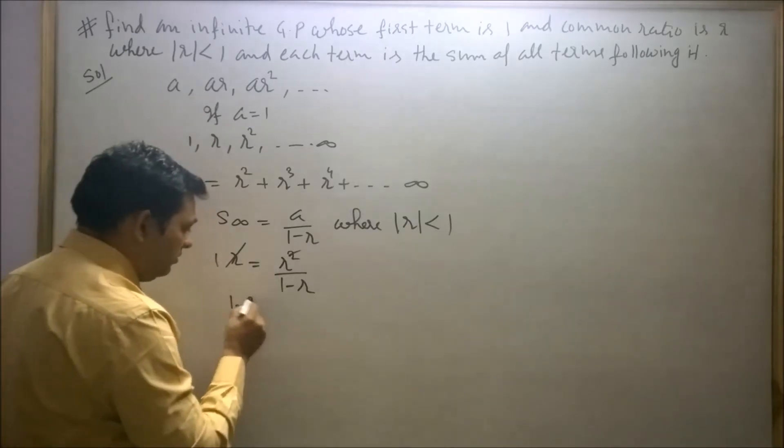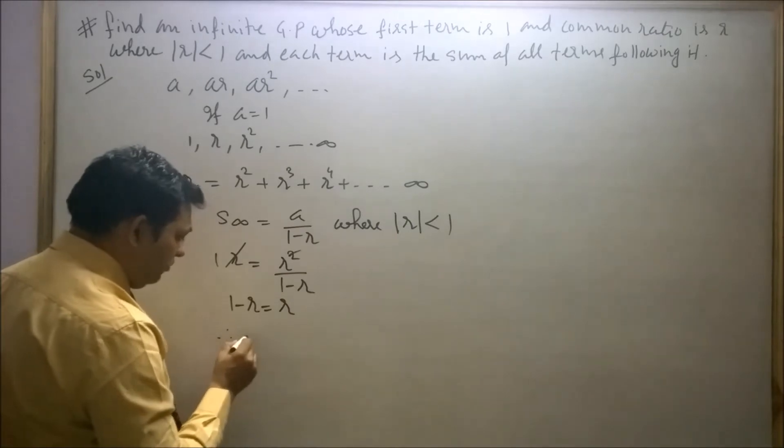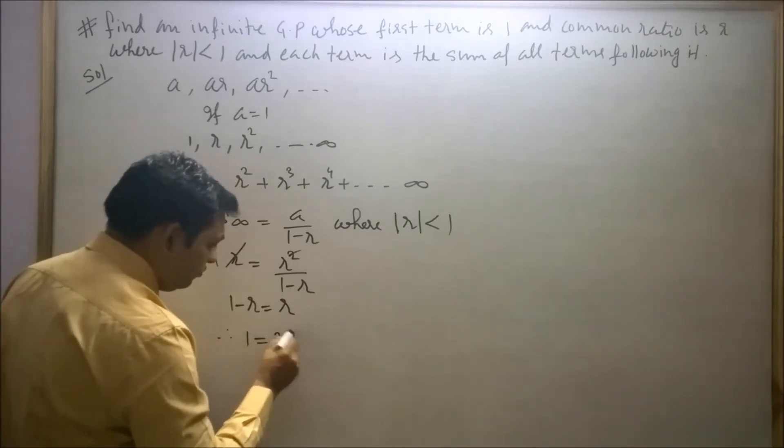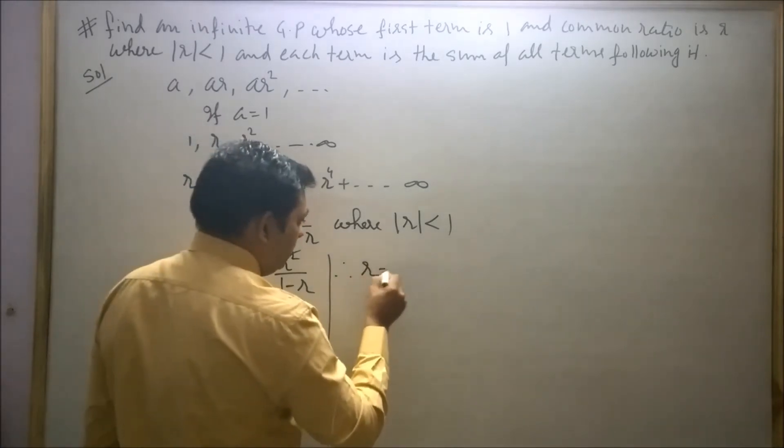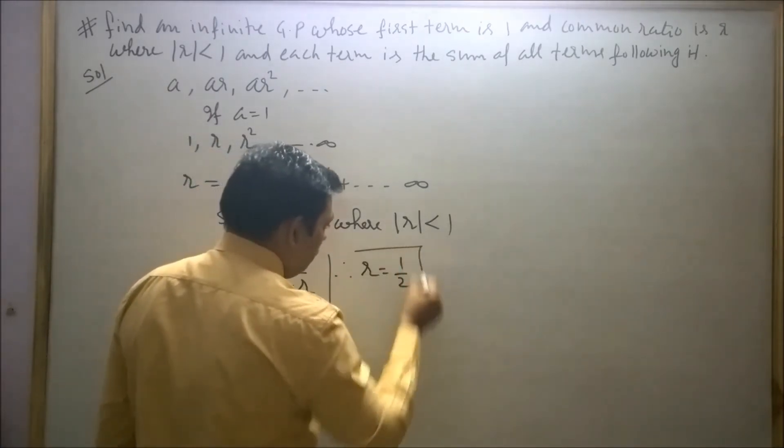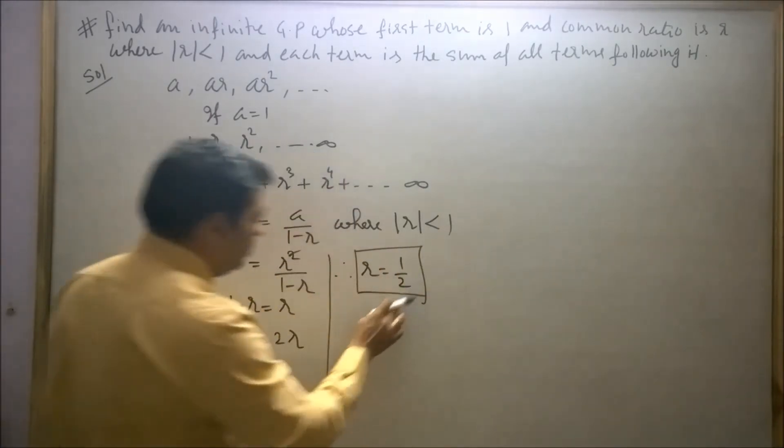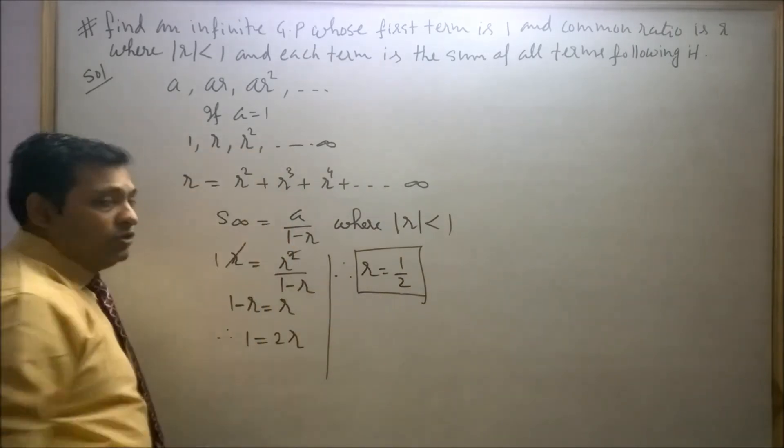Now cross multiplying these two terms, one minus R is equal to R. Therefore one is equal to twice of R, or we can say R is equal to one by two. Now put this value in this sequence, so we get the required result.